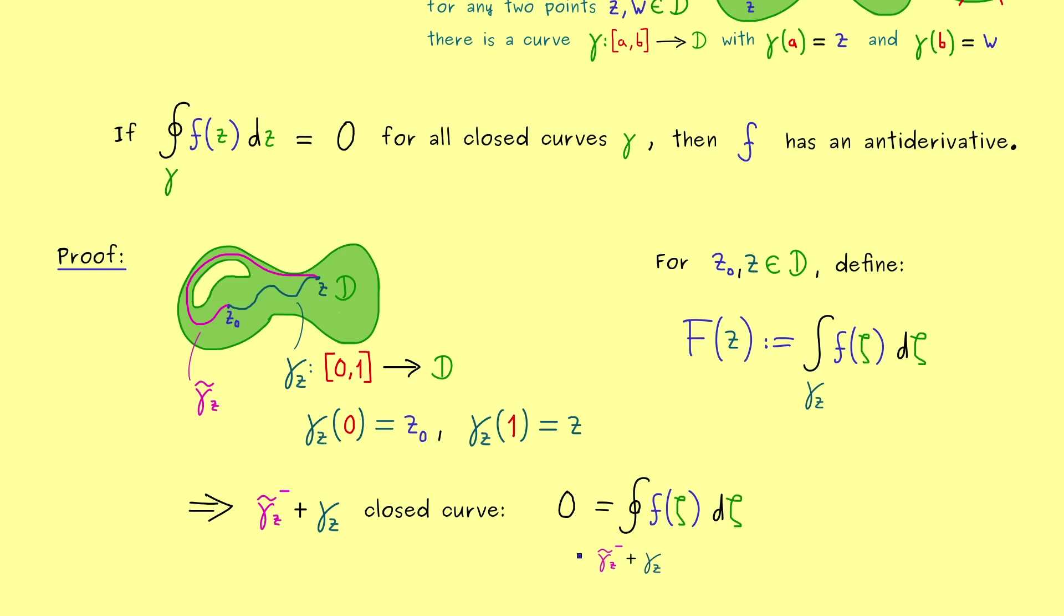Okay, then we know by assumption that this contour integral here is 0. Hence, the only thing we have to do is to split it up into two separated contour integrals. And by definition of the contour integrals, we simply know it's the one integral plus the other one.